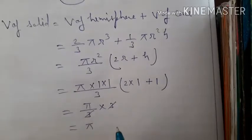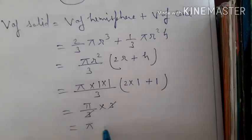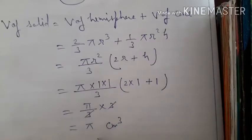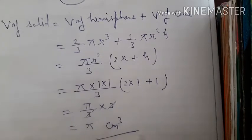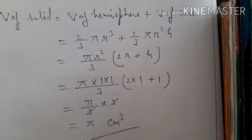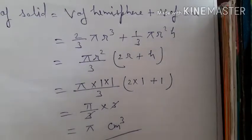Since the question asks to find the volume in terms of pi, we do not substitute the value of pi. So the volume of the solid comes out to be π cm³. The unit of volume is cubic units, so the answer is π cm³.